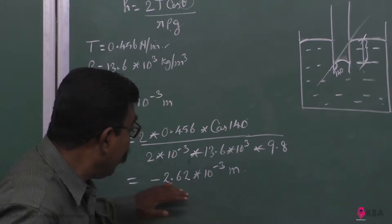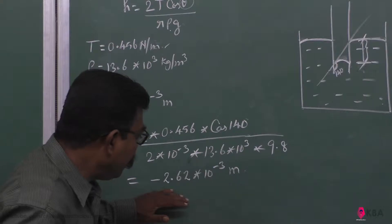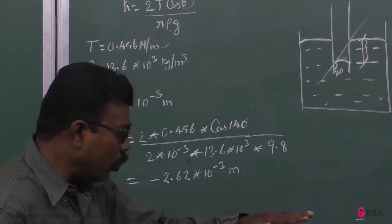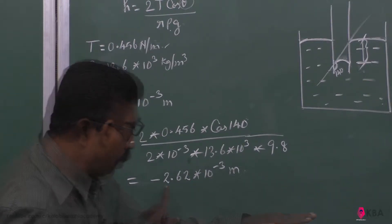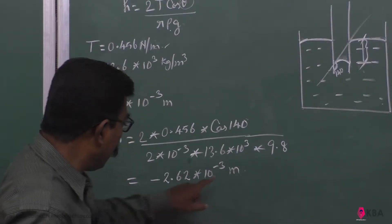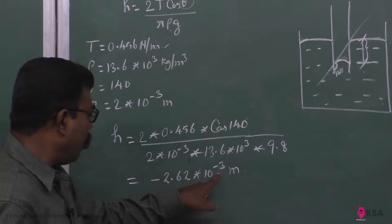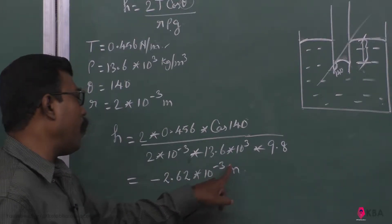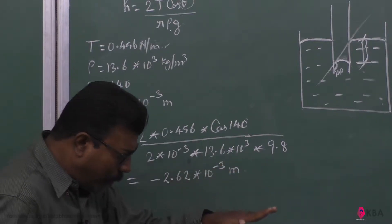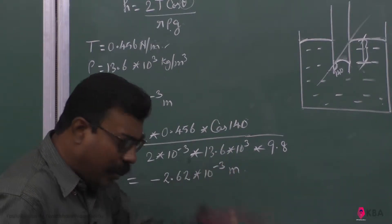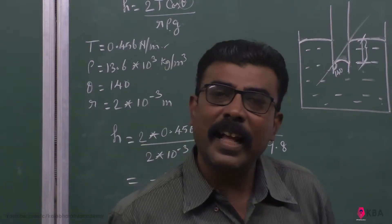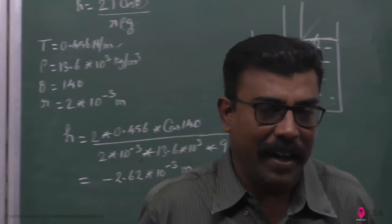The answer is minus 2.62 × 10⁻³ meter. This means that a very small portion of mercury shows a dip.